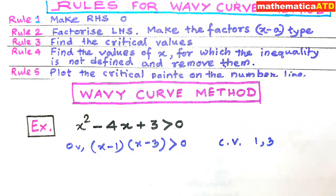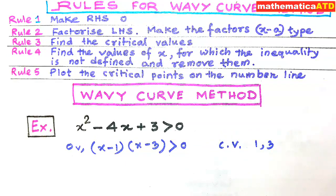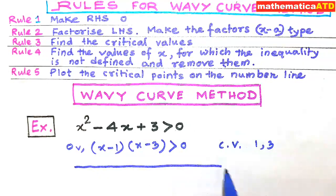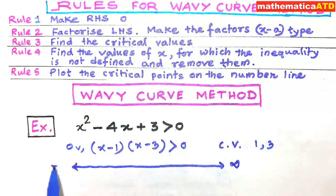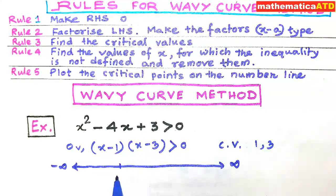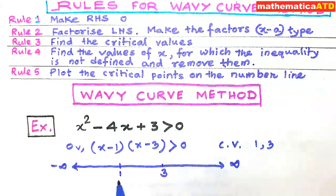Rule number five: plot the critical points on the number line. Let us draw a number line — the right side is for positive infinity and the left side for negative infinity. The first critical point is 1 and the second is 3. So three parts are created on the real line.